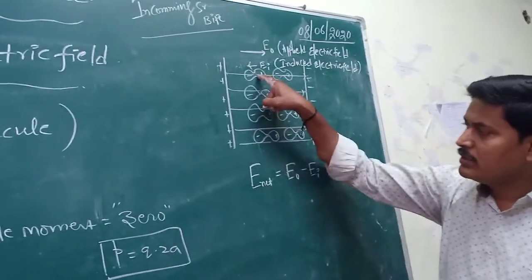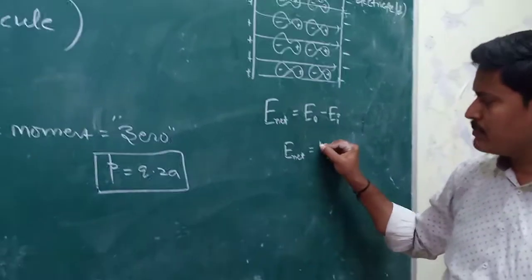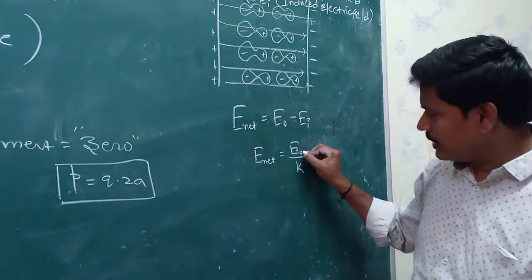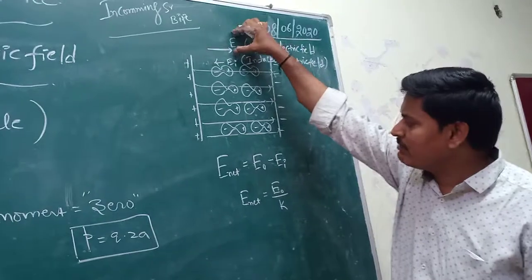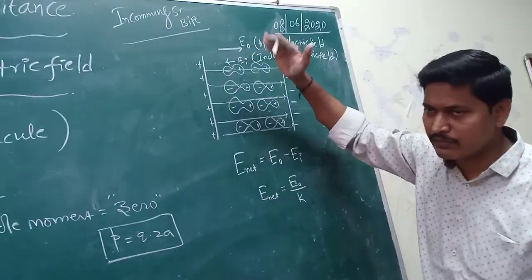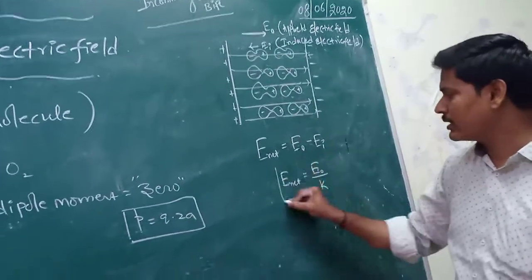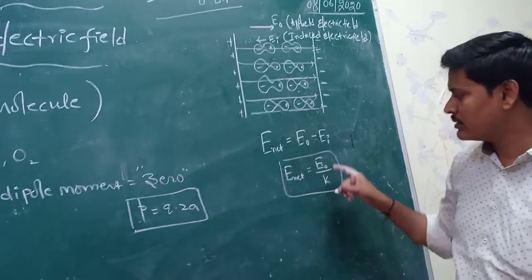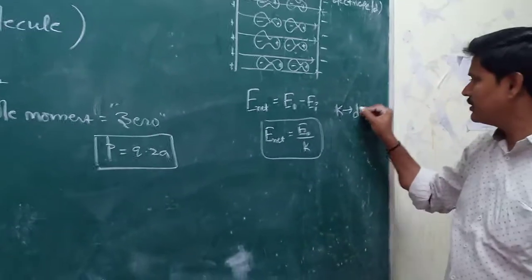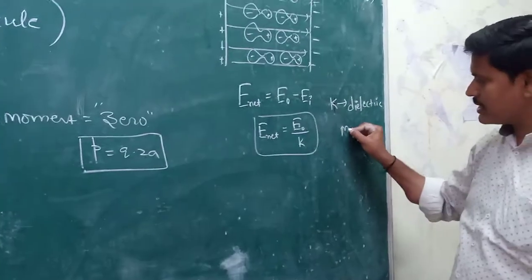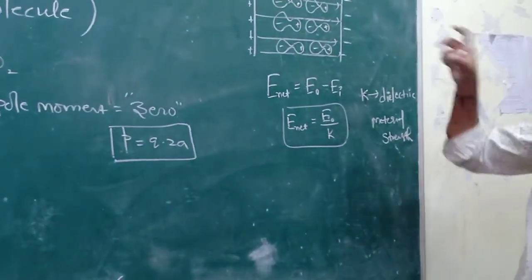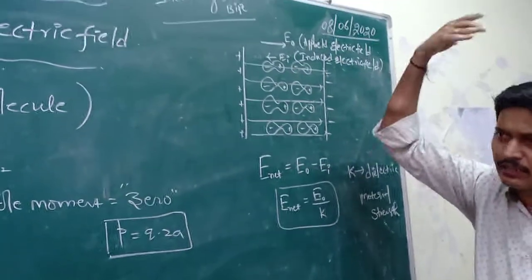The net electric field inside the dielectric equals the applied electric field E₀ minus the induced electric field Eᵢ. This net electric field value is decreased by K times, so the net field equals E₀/K. That means, compared to the applied value, the field is decreased by K times — where K is the dielectric constant, representing the material strength.